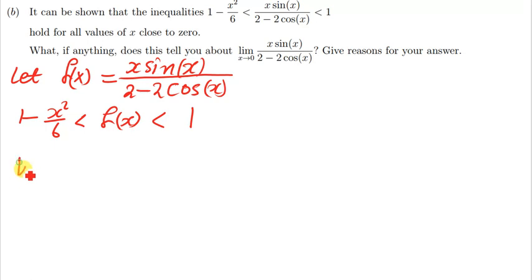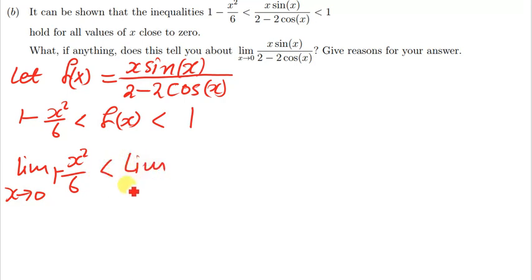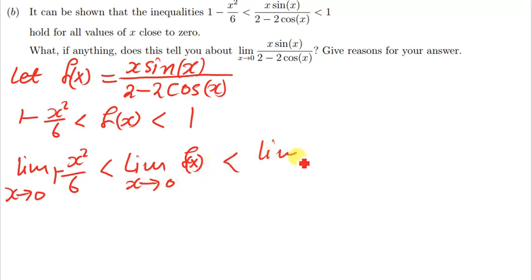This gives us: the limit of 1 minus x squared over 6 as x approaches zero, is less than the limit of f(x) as x approaches zero, which is less than the limit of 1 as x approaches zero. Now we can evaluate each of these limits.